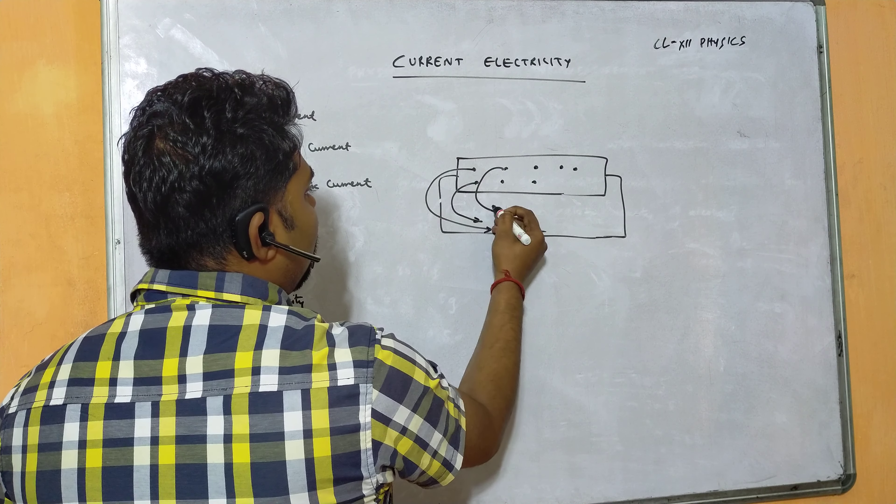From Newton's second law, F = ma, so α = F/m. The force on an electron in an electric field E is F = eE, so α = eE/m. Substituting, the expression for drift velocity becomes: Vd = eEτ/m, where e is the charge of an electron, E is the electric field, m is the mass of an electron, and τ is the relaxation time. Drift velocity is of the order of 10⁻⁶ m/s, which is very small compared to thermal velocity (10⁶ m/s).